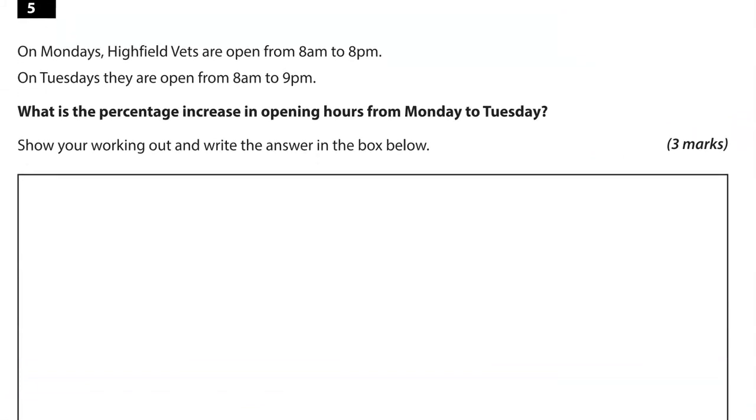On Mondays, Highfield vets are open from 8am to 8pm. On Tuesdays, they open from 8am to 9pm. What is the percentage increase in opening hours from Monday to Tuesday? So from 8am to 8pm, that's 12 hours. We've got an increase by 1 hour. So that is 1 twelfth. So that's the increase as a fraction, but we've got to work it out as a percentage. So that is also 1 divided by 12. The fraction line means division. So what we're going to do is 1 divided by 12.